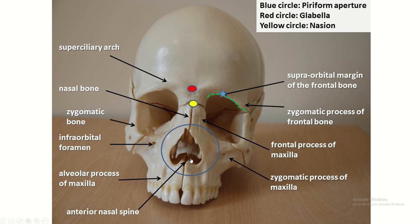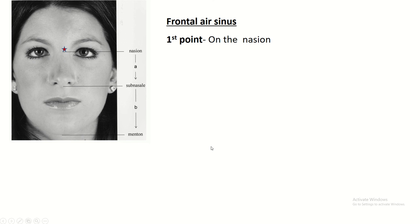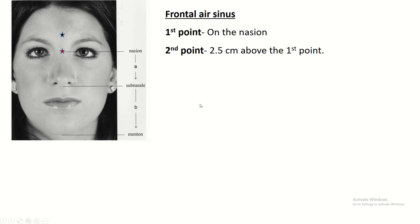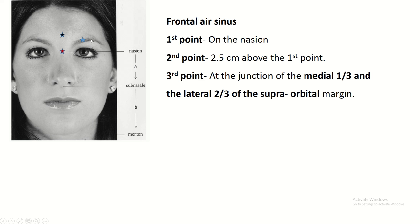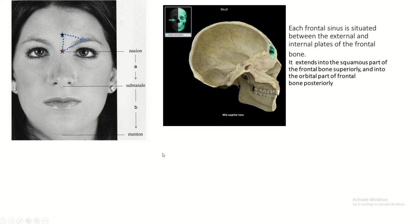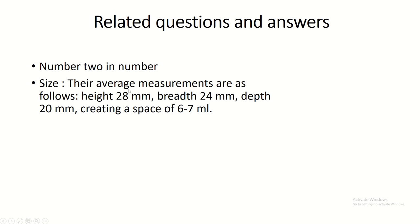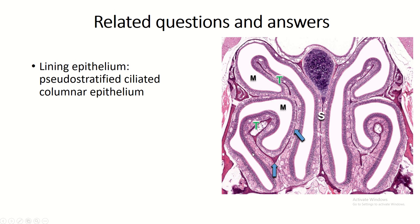Surface anatomy of the frontal sinuses. This is the glabella. The nasion is the meeting point of the two nasal bones with the nasal notch of the frontal bone. The first point is on the nasion, the second point is 2.5 cm above the first point, and the third point is at the junction of the medial one-third and lateral two-thirds of the supraorbital margin. Join these points — the frontal air sinus is present within the frontal bone. There are two sinuses. The lining epithelium is simple pseudostratified ciliated columnar epithelium.